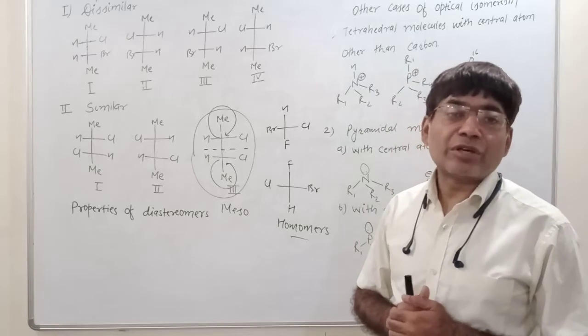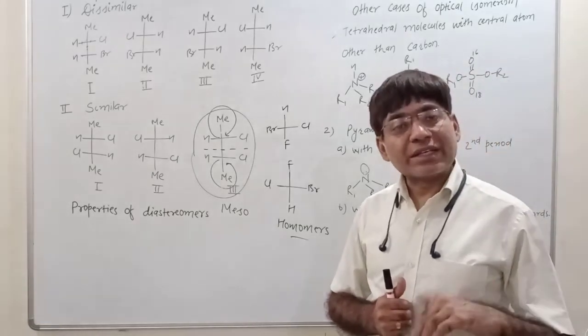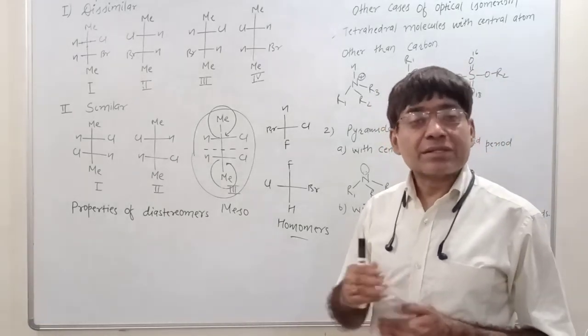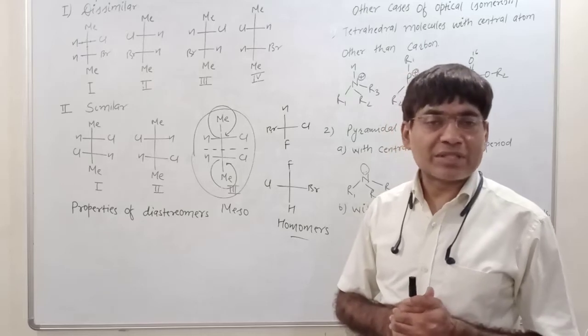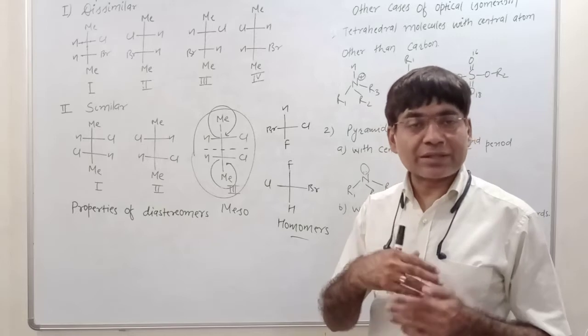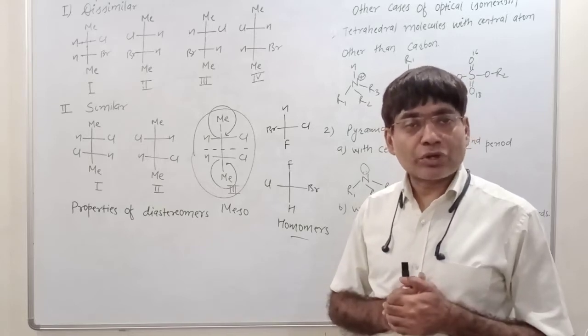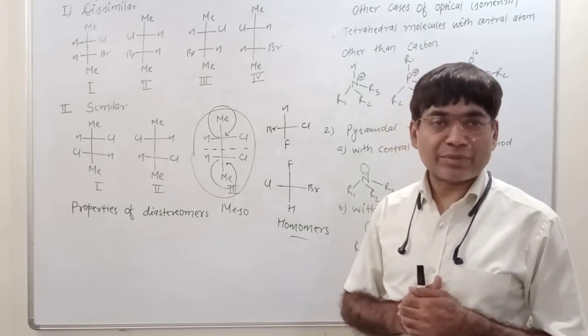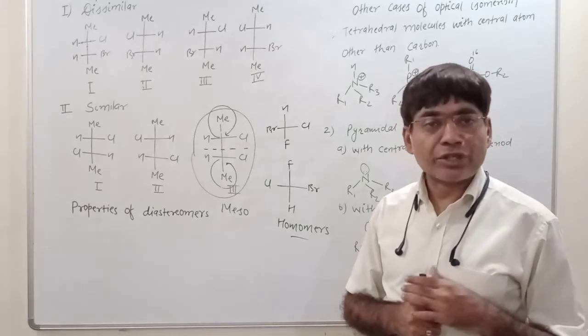What is homomers? We have one molecule which has been written stereochemically in other types. What happens? When you have two different kinds of configuration, then the configuration will be the same.